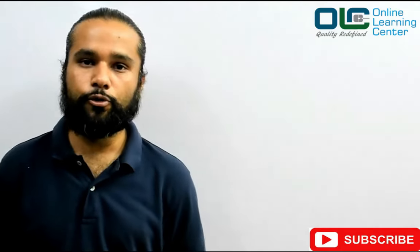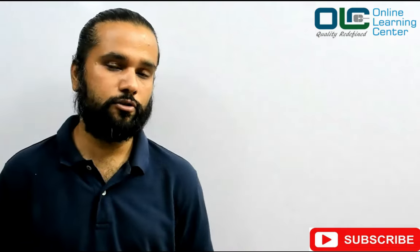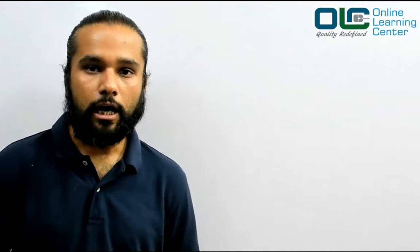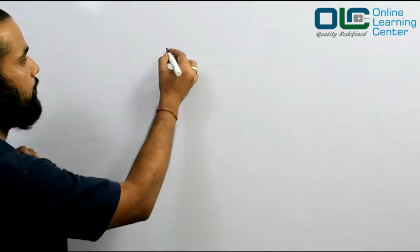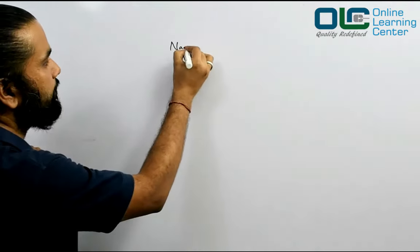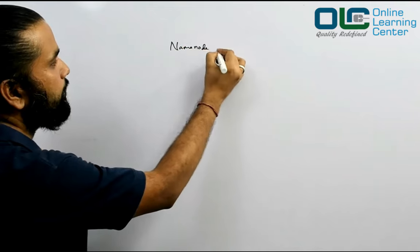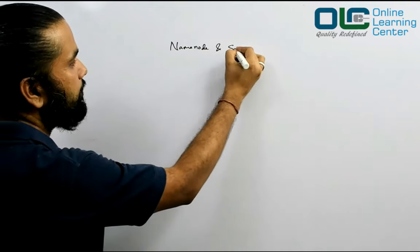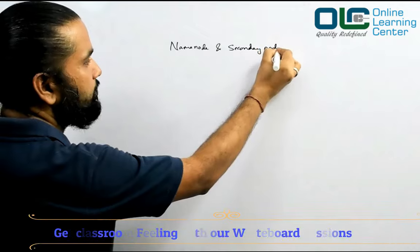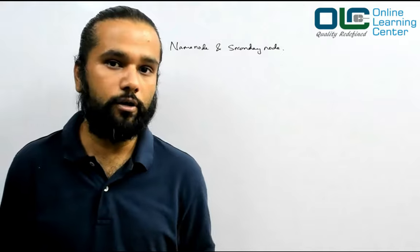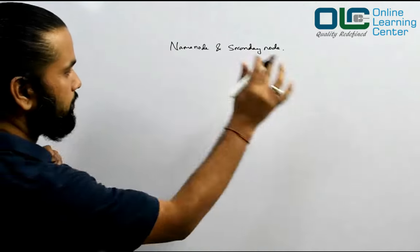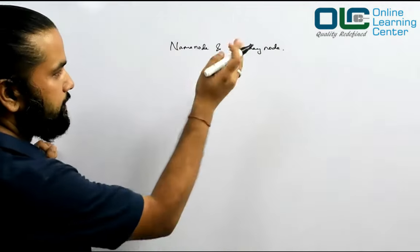In our last class, we talked about what Hadoop is, we talked about Hadoop 1 architecture, and then we understood the whole concept of how exactly the data gets stored and then processed. Today we'll start with an important topic called name node and secondary name node. Let me draw the architecture again so that we understand where exactly they are.